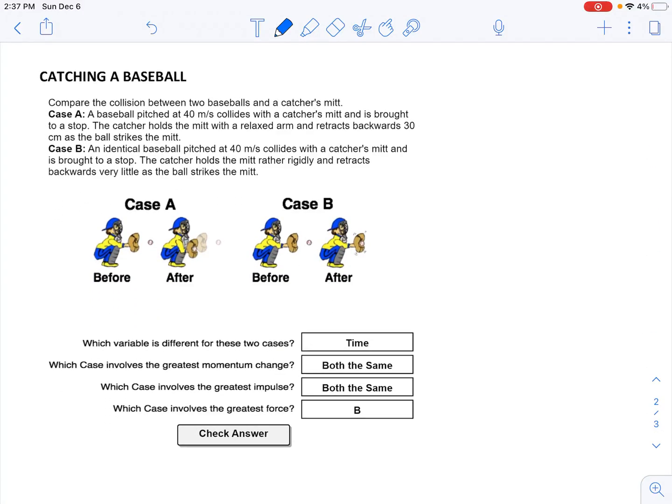When it comes to catching a baseball, again you got to read the details. They're both hitting the glove at 40 meters per second, about 90 miles an hour or less. And for situation A, you can see that he moves the glove backwards a little bit, kind of like absorbing the catch more so than in part B.